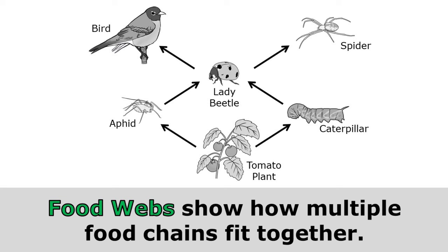Food webs show how multiple food chains fit together. I can still see the food chain that we just looked at here, showing energy going from the tomato plants, to the aphids, to the lady beetle, to the spider. But this food web gives me a more complete picture of what's going on in this ecosystem.